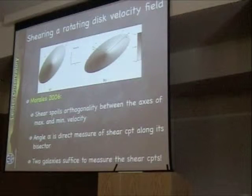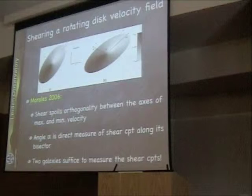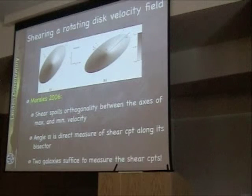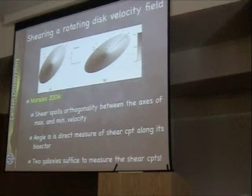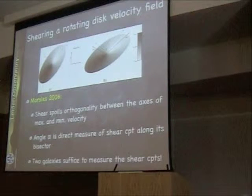Here is a rotating disk. This is the velocity field — this is the approaching side and the receding side, beautifully orthogonal kinematic axes, and the major and the zero velocity axis here. If you imagine shearing this galaxy, then you shear the velocity field with it.